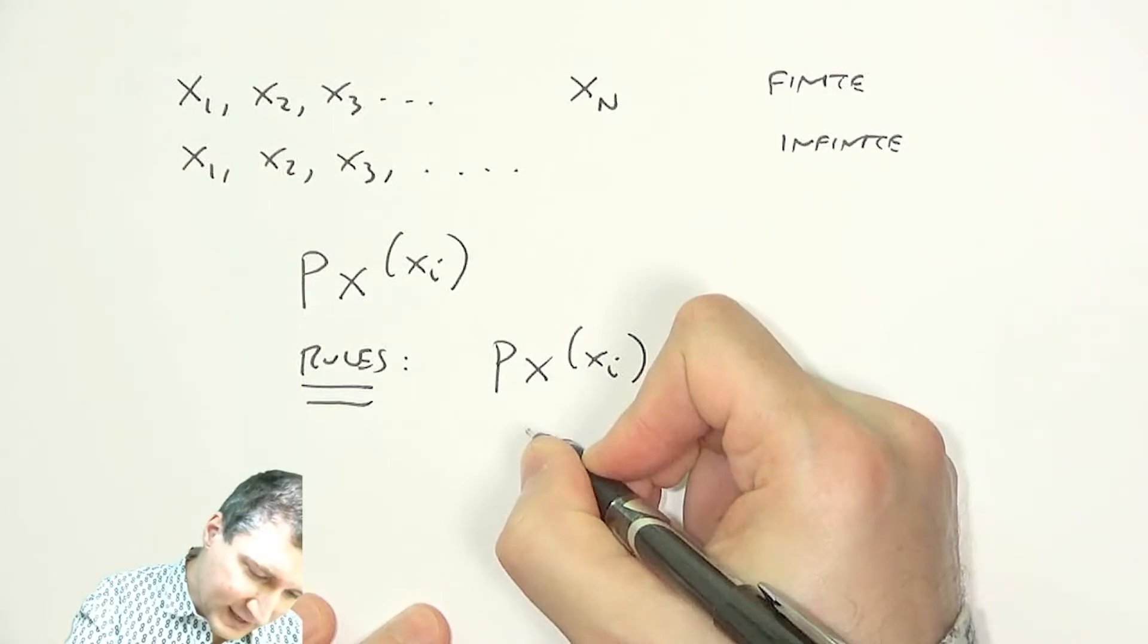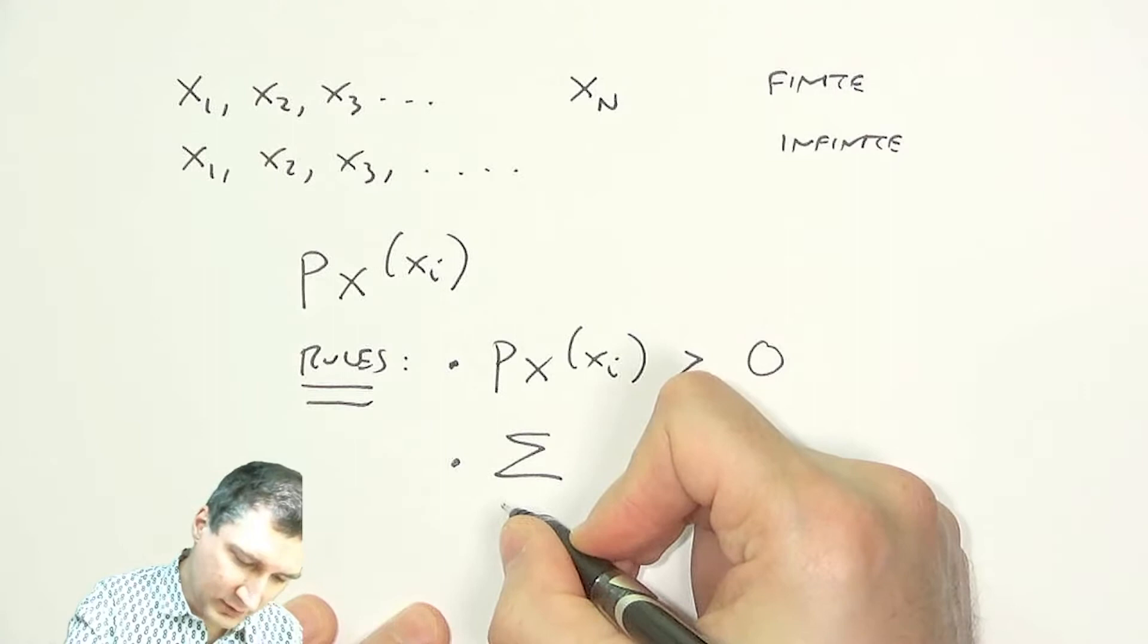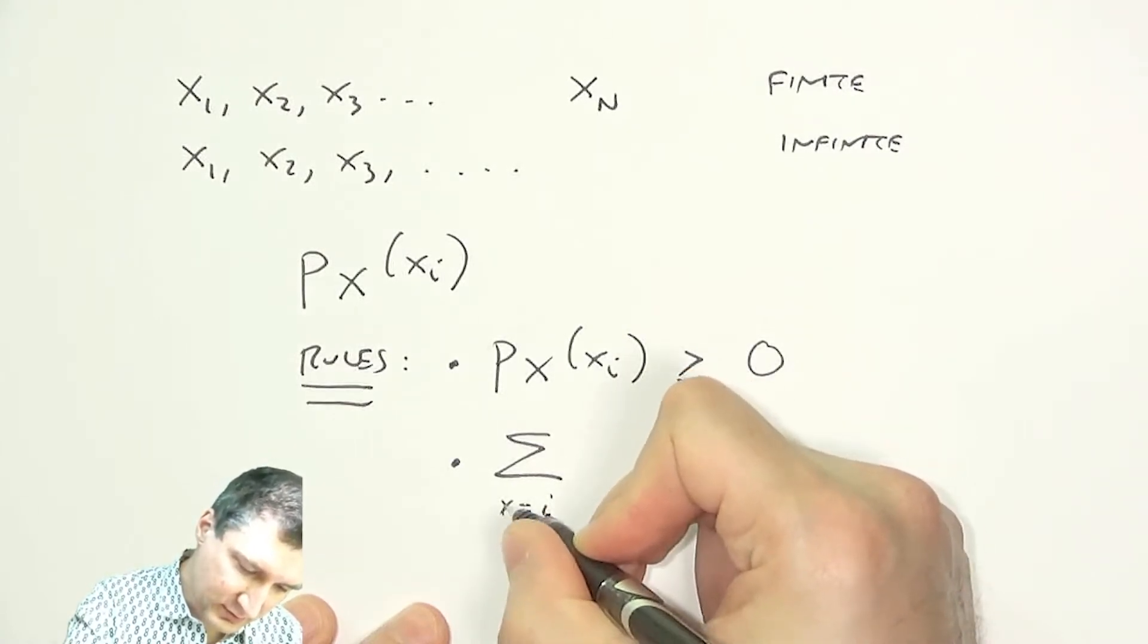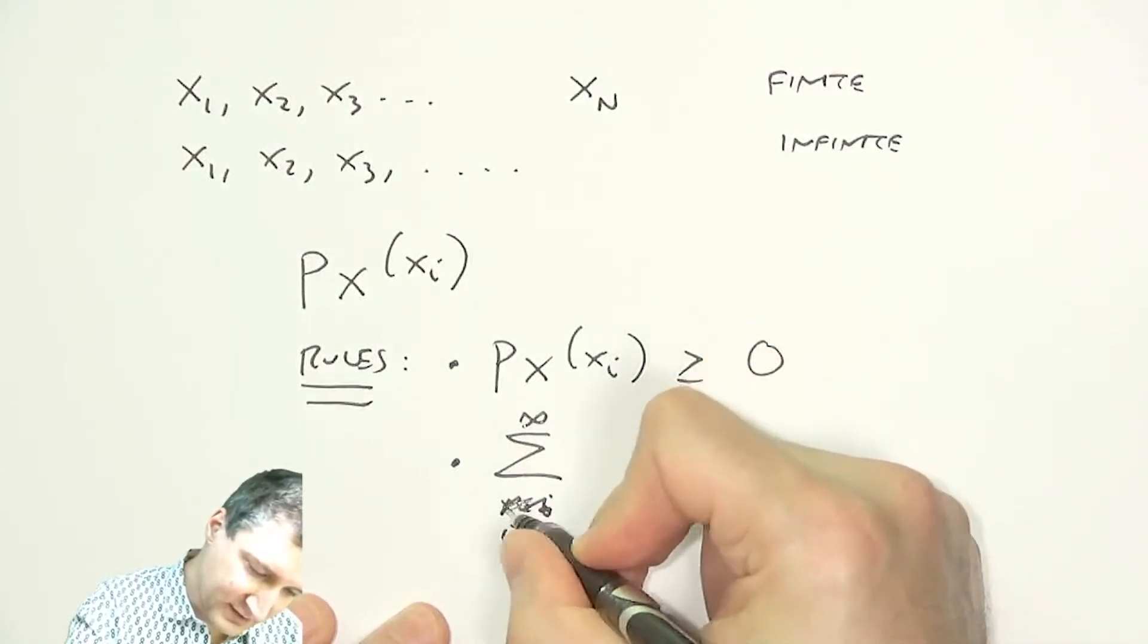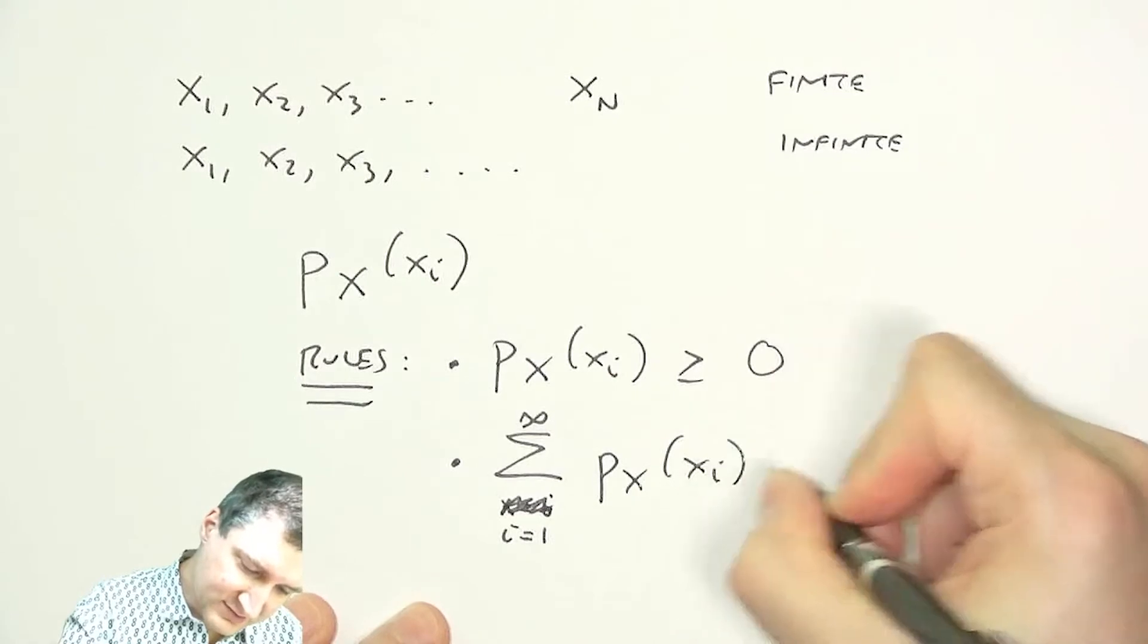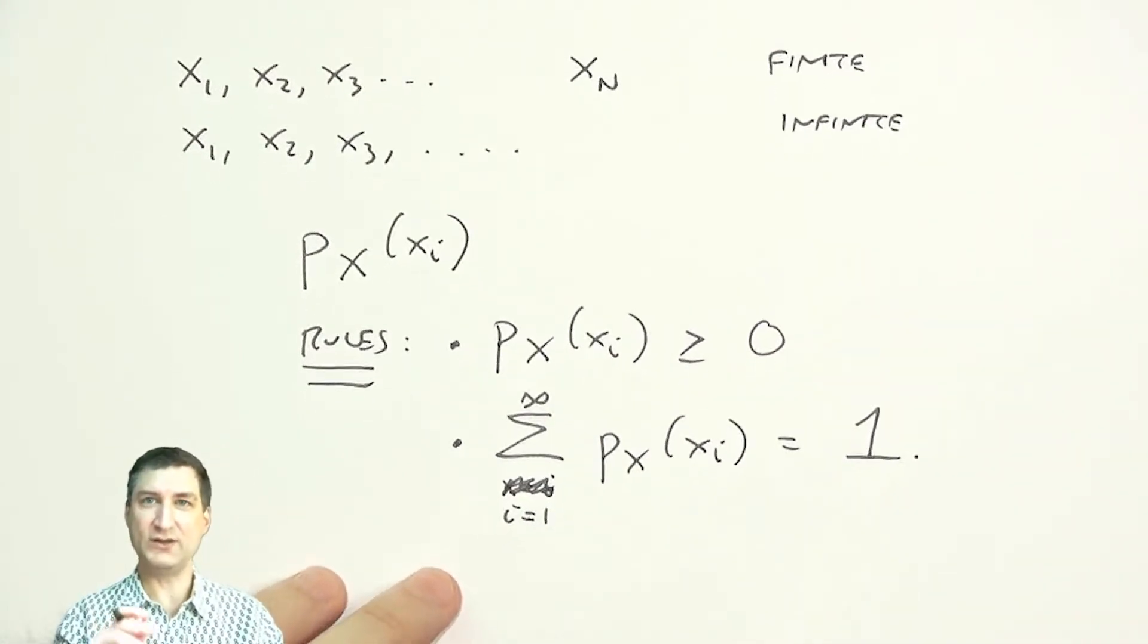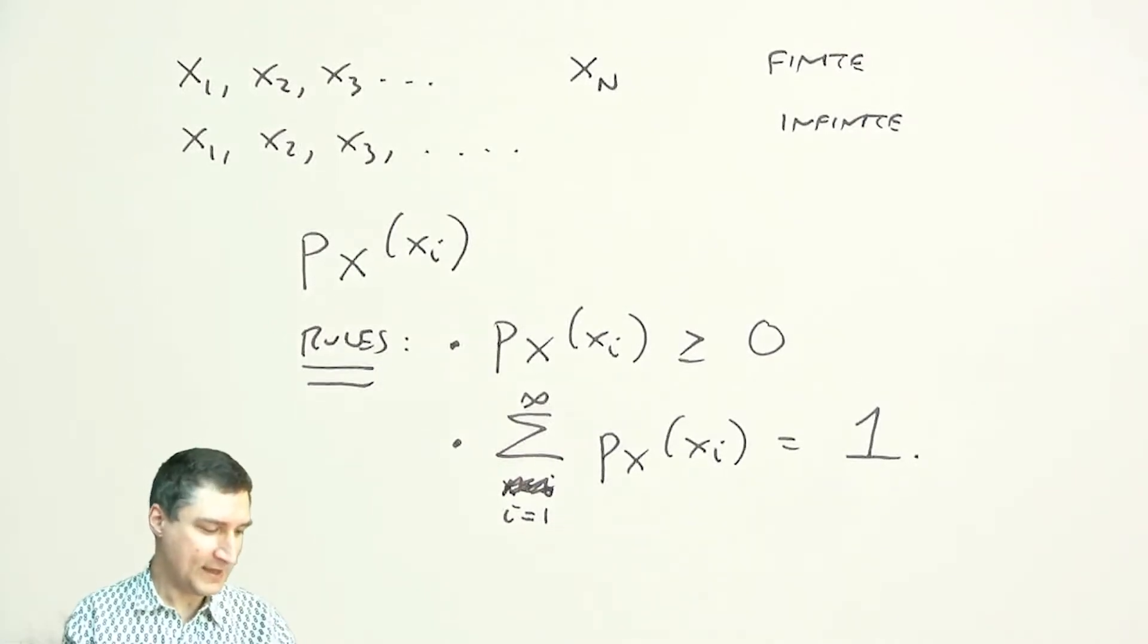Also, if I look at the sum over all of the possibilities, i equals 1 to possibly infinity, that if I add up all of these values, I have to get 1. That's like saying that exactly one of these numbers has to happen, and if I add up all those probabilities, I have to get a total value of 1, one unit of probability. So, those two rules make sense.